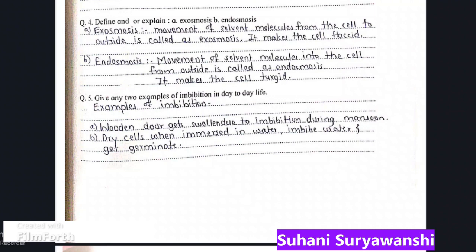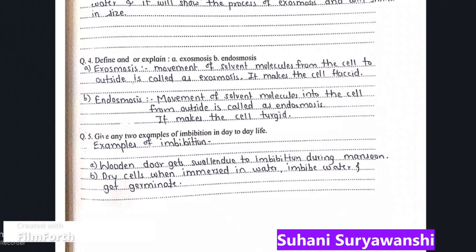Next: give any two examples of imbibition in day-to-day life. First, a wooden door gets swollen due to imbibition during monsoon. Second, dry seeds when immersed in water imbibe water and get germinated.